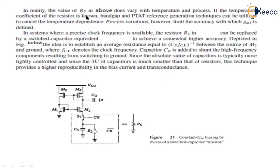In reality, the value of Rs above does not vary with temperature and process. If the temperature coefficient of the resistor is known, bandgap voltage and PTAT reference emission techniques can be utilized to cancel this temperature dependence of the resistor as well. However, process variation limits the accuracy with which GM1 is defined.